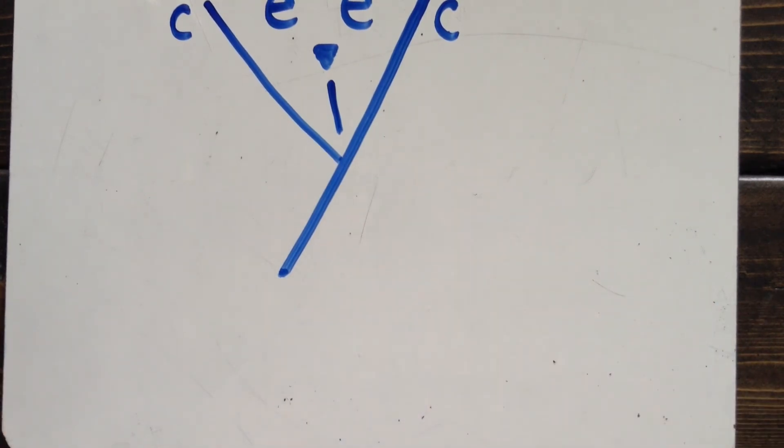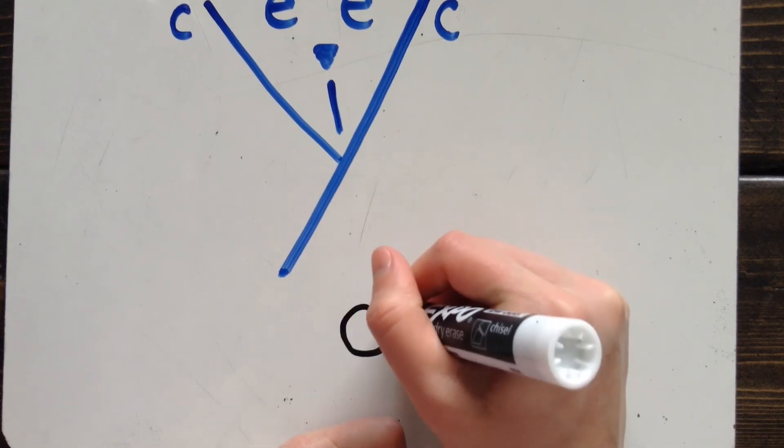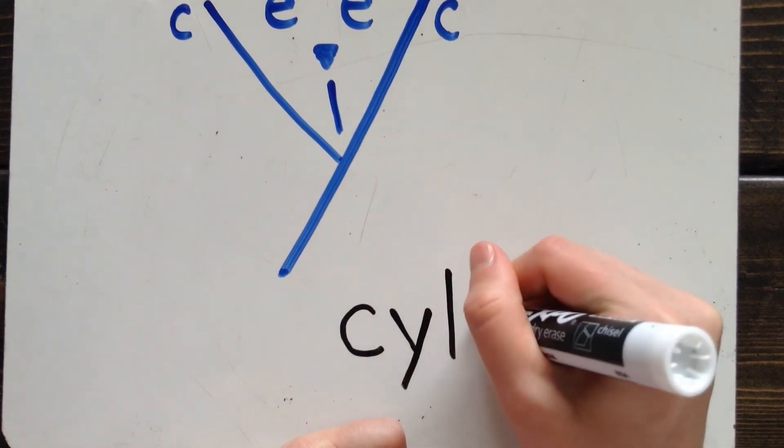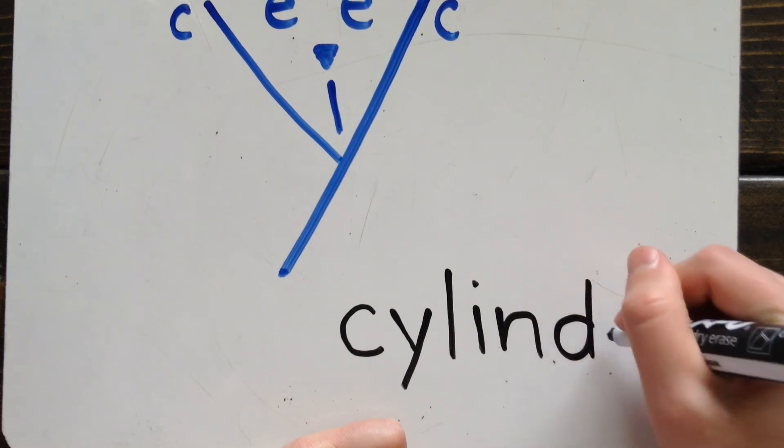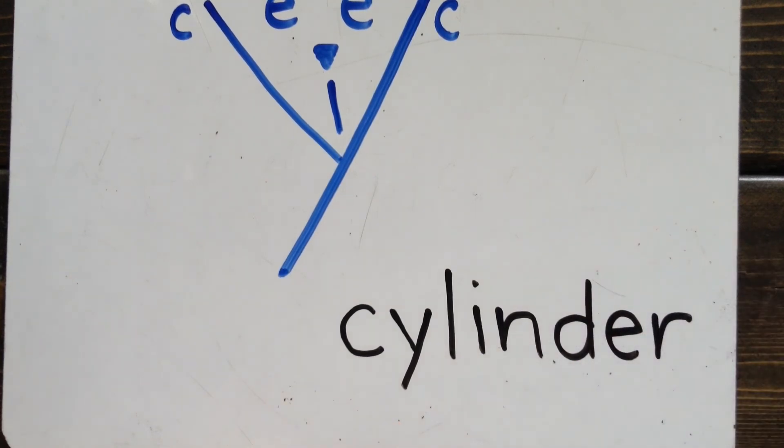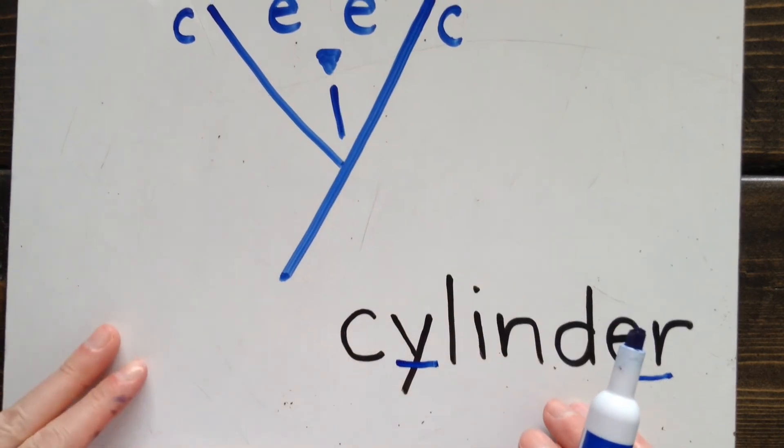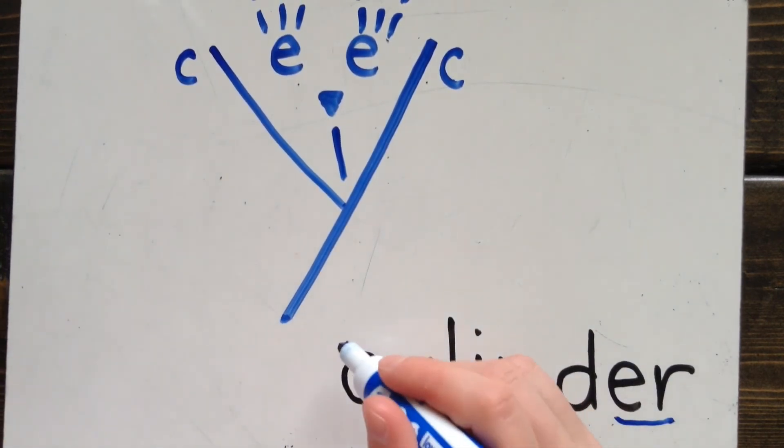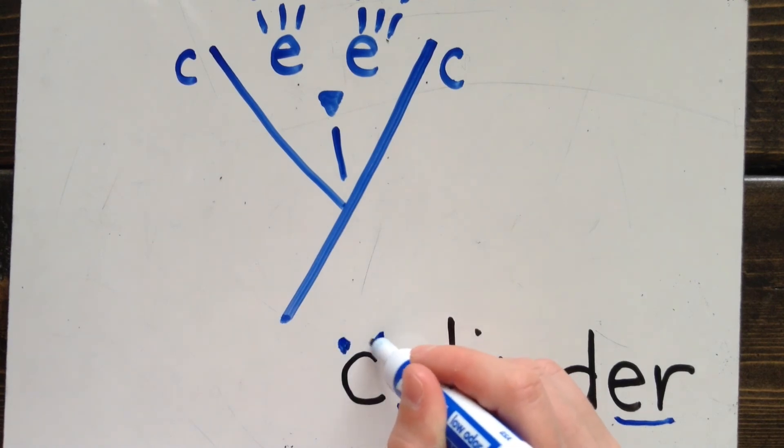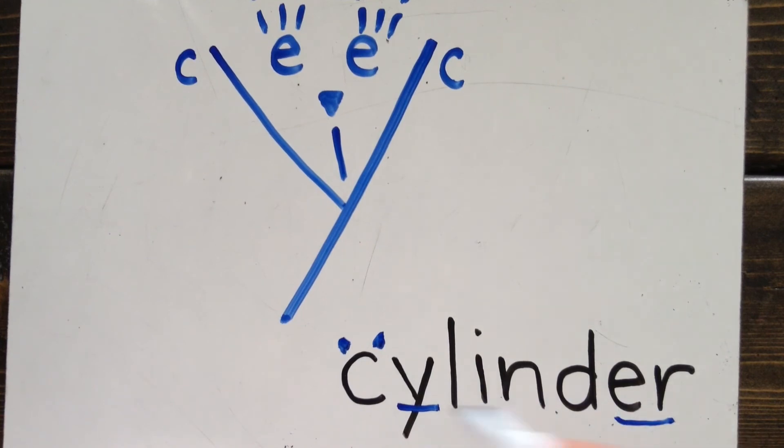Let's look at one last example of a soft C word. This is the word cylinder. You might notice the R controlled vowel at the end. But also pay attention to what type of C we have at the beginning. The letter Y is in our Cici Cat picture. That means I need cat ears on my C. Cylinder.